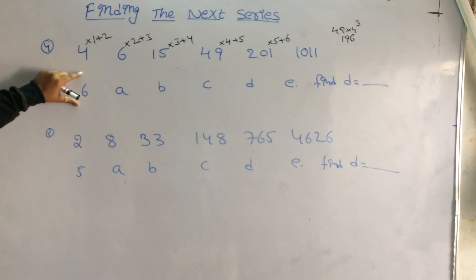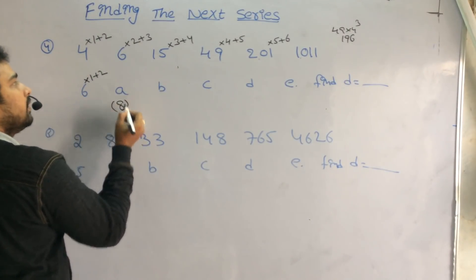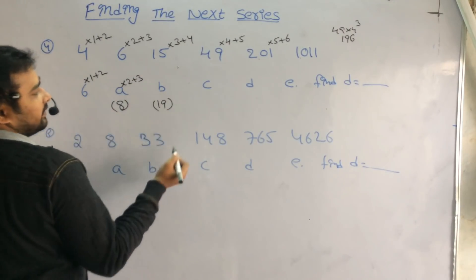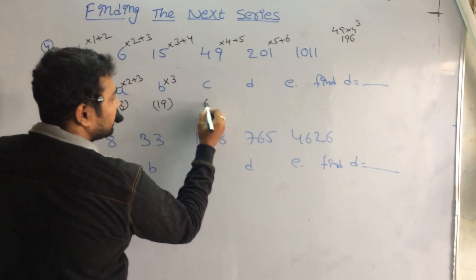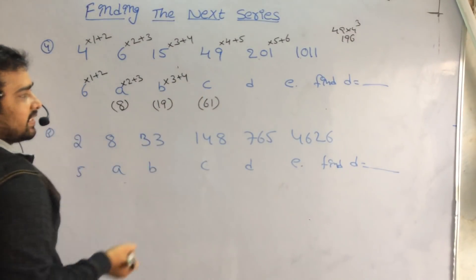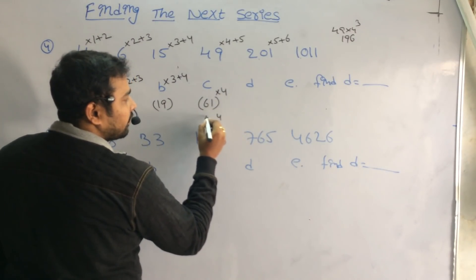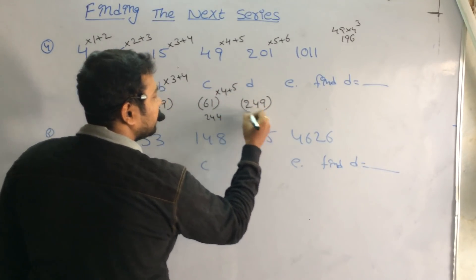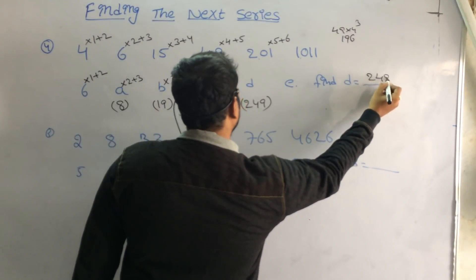We apply the same logic to 6. 6 into 1 plus 2 is 8. Then 8 into 2 plus 3 is 19. Then 19 into 3 plus 4 is 61. Then 61 into 4 plus 5 is 249. So the answer is 249.